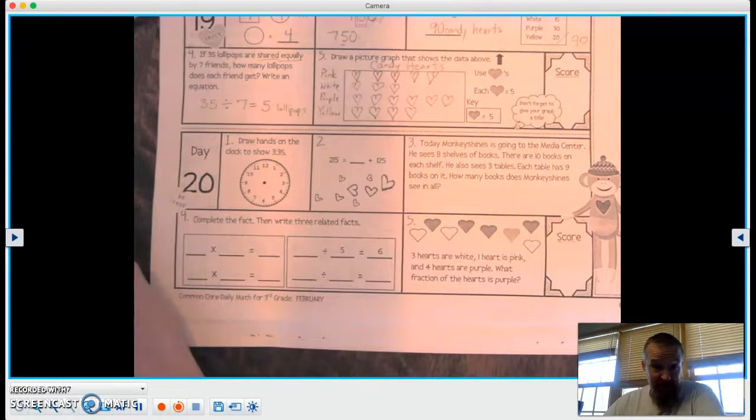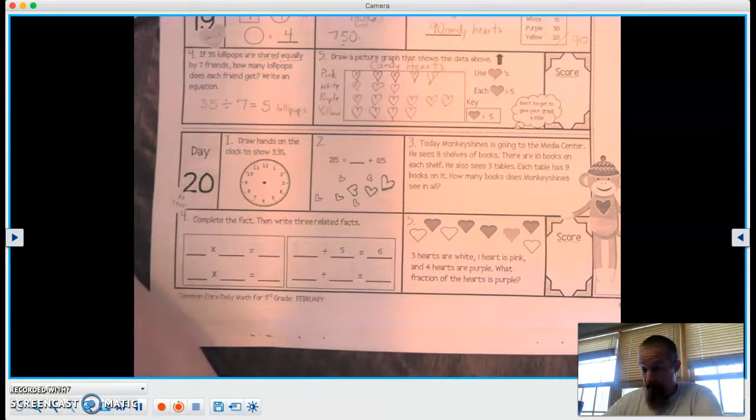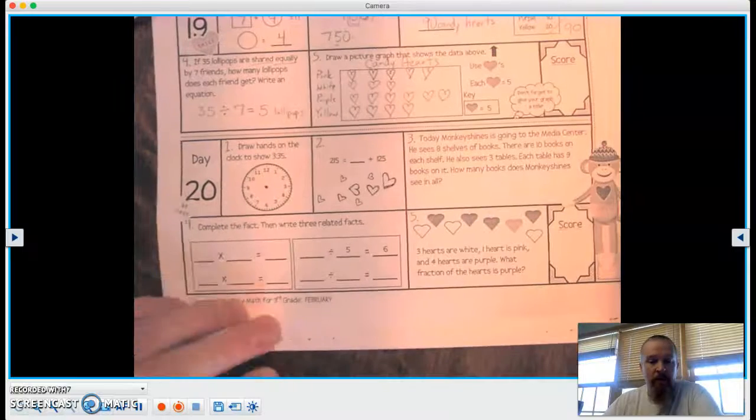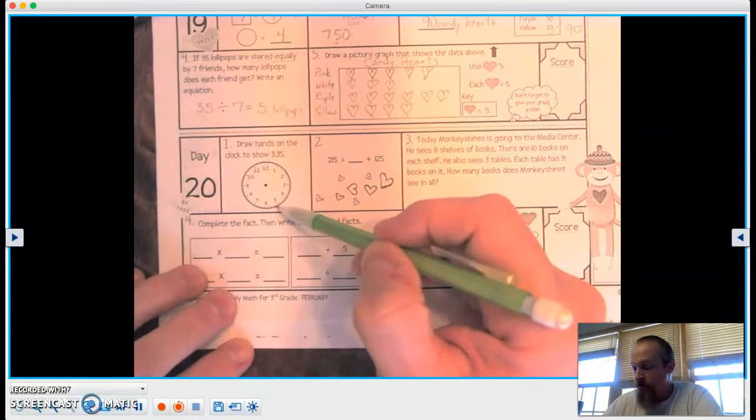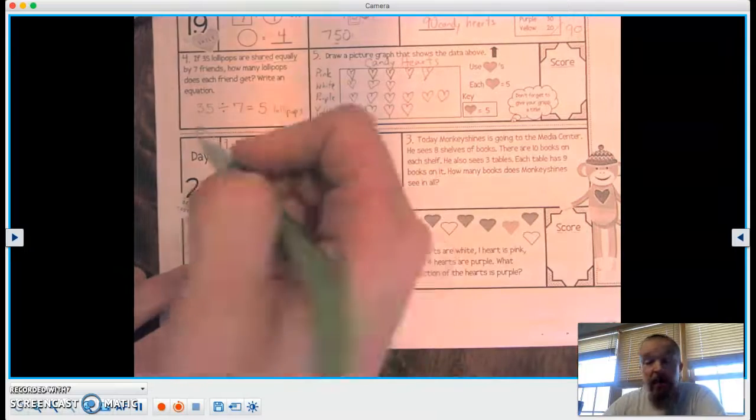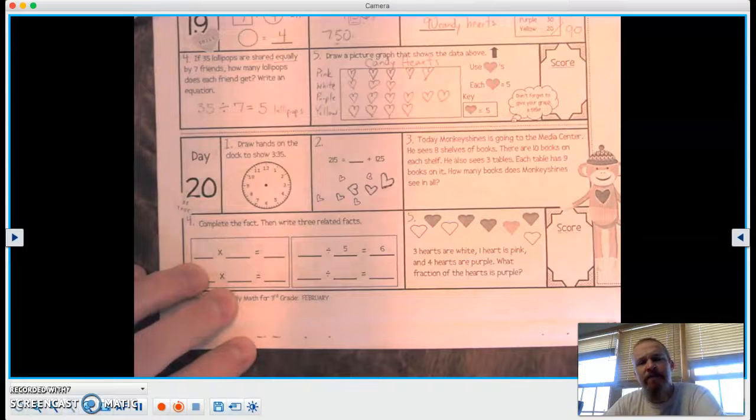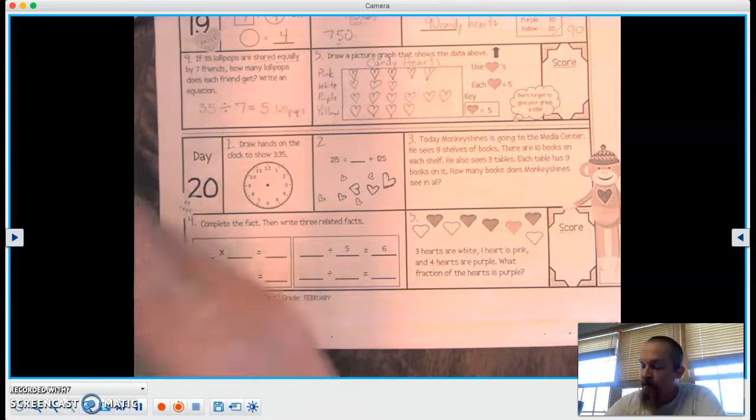Number one, draw hands on the clock to show 3:35. Let's get that minute hand out right away. 5, 10, 15, 20, 25, 30, 35, right at that seven. Hey, seven times five is 35. Very interesting.